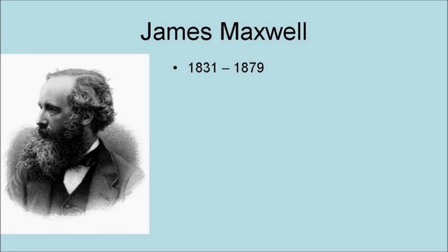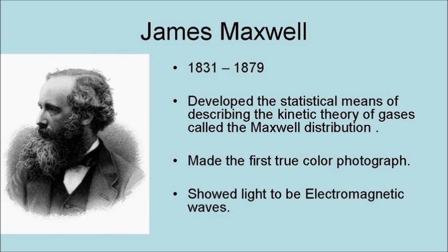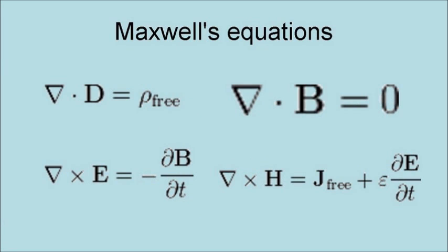James Maxwell lived from 1831 to 1879. He developed a statistical means of describing the kinetic theory of gases called the Maxwell distribution. He made the first two-color photograph, and he showed light to be electromagnetic waves. The four equations known as Maxwell's equations mathematically describe electromagnetism and electromagnetic waves, that is, light.